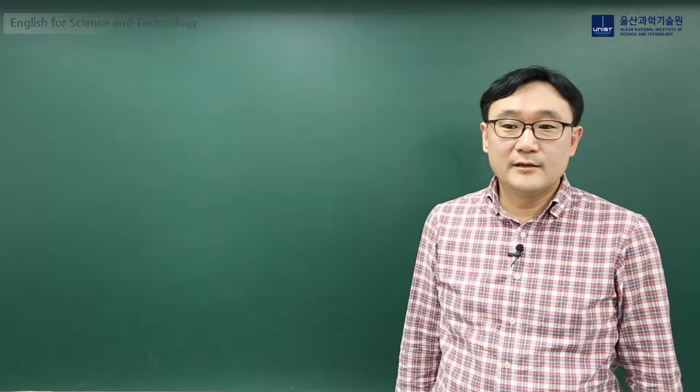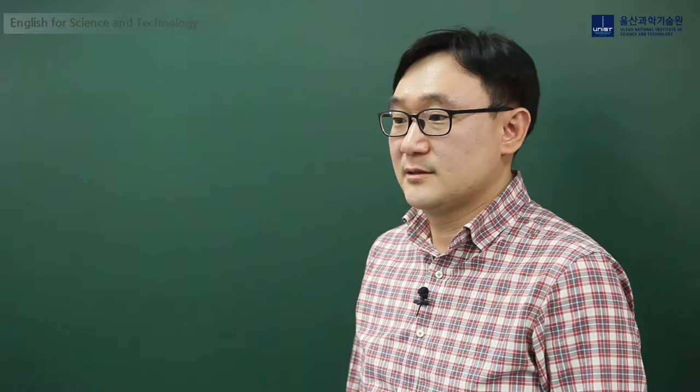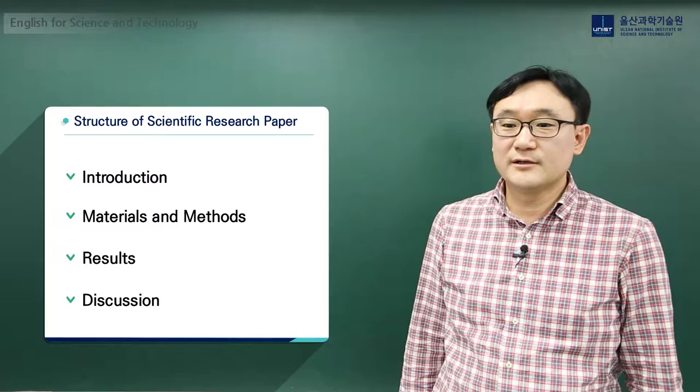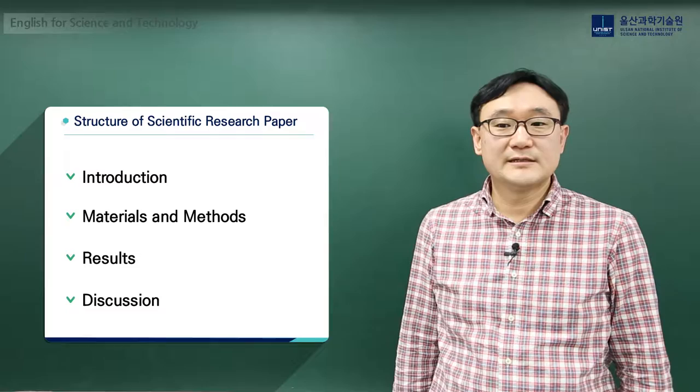Typically, the structure of a scientific research paper consists of four parts or sections: introduction, materials and methods, results, and discussion. Each section consists of paragraphs, and of course, the paragraphs consist of sentences, phrases, and words.